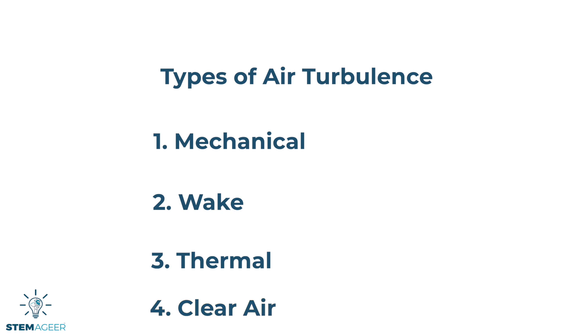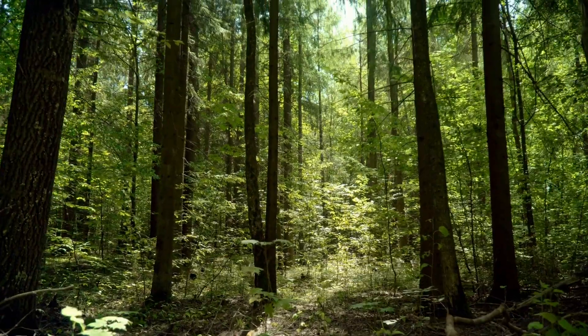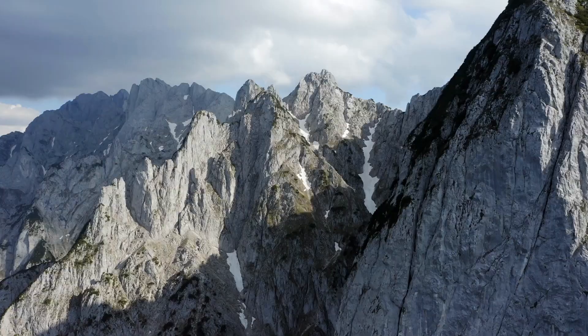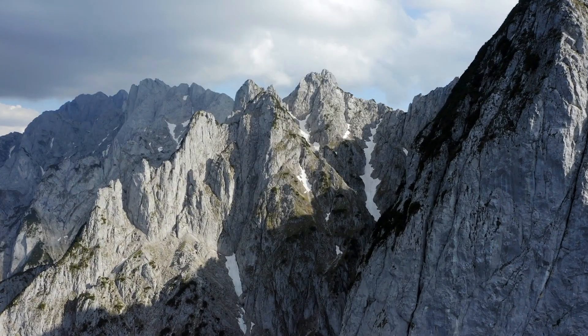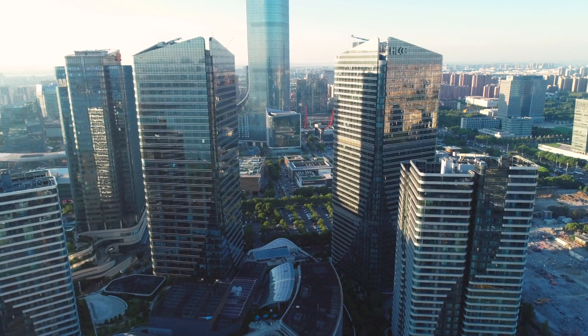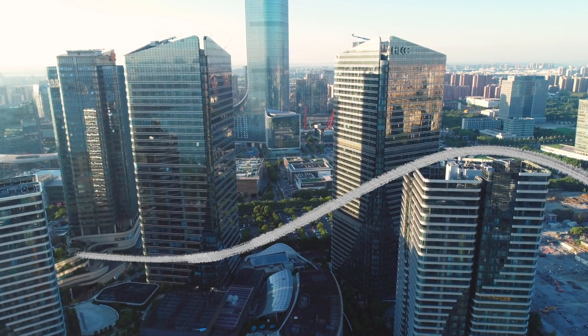Mechanical turbulence can happen when objects or structures on the Earth's surface, like trees, hills, mountains, or buildings alter or disrupt air flow. The movement of air near or around these objects can create eddies and turbulence.